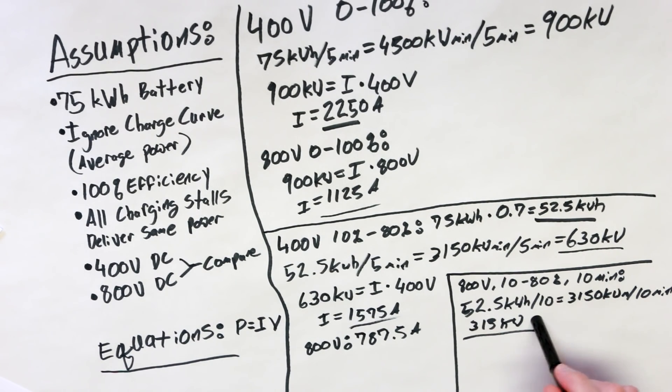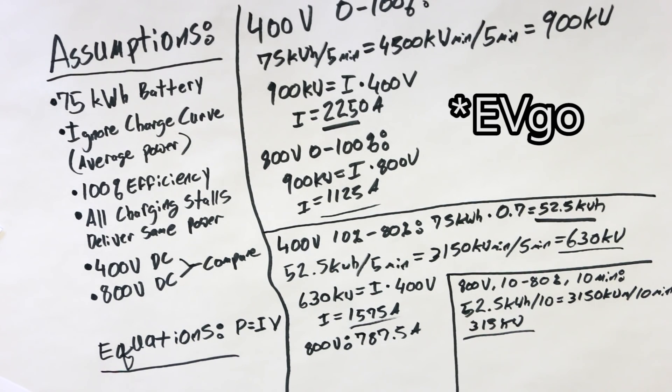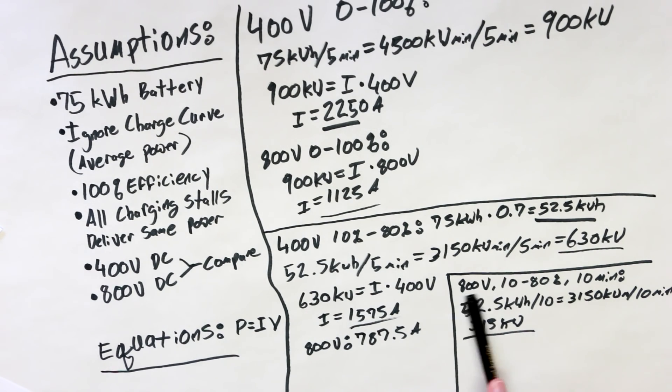I'm sure some of you are looking at that 315 kilowatt number there and going, wait a minute, I've seen something like that before. And you're right. Because Tesla and a few other companies have been talking about developing charging systems that could deliver 315, 325, 345 plus kilowatts of power. Now, they're talking peak power, and I'm talking average power here. But it starts to come into focus that this may be possible in the near future, charging a 75 kilowatt hour car from 10% to 80% in 10 minutes.